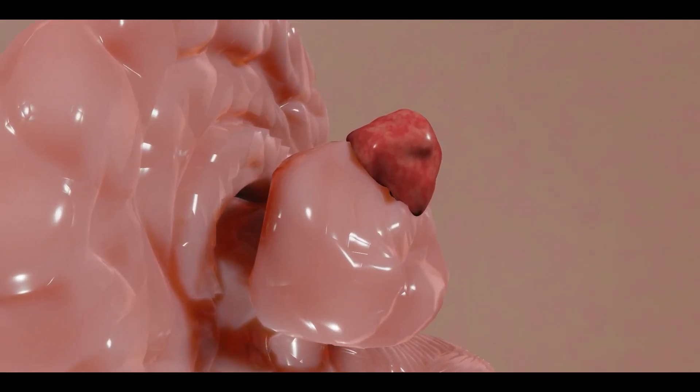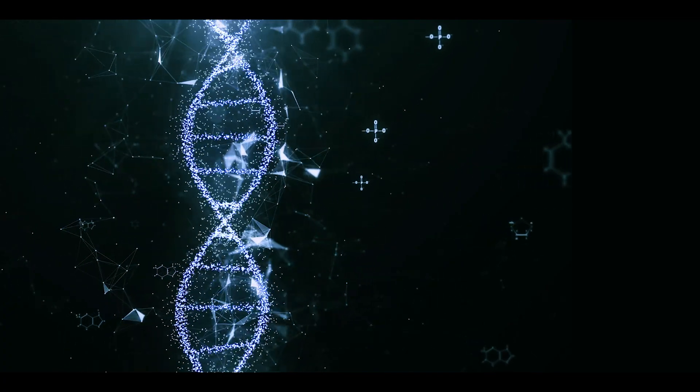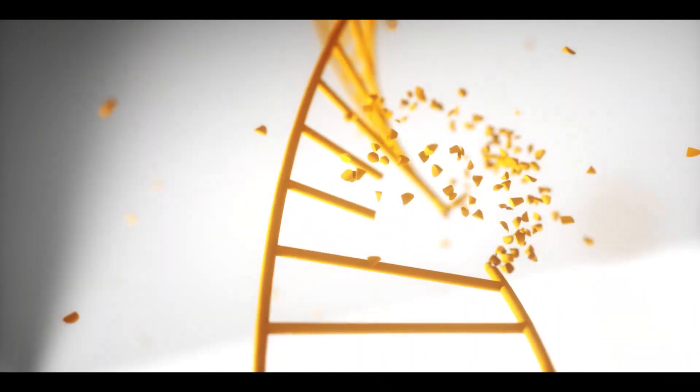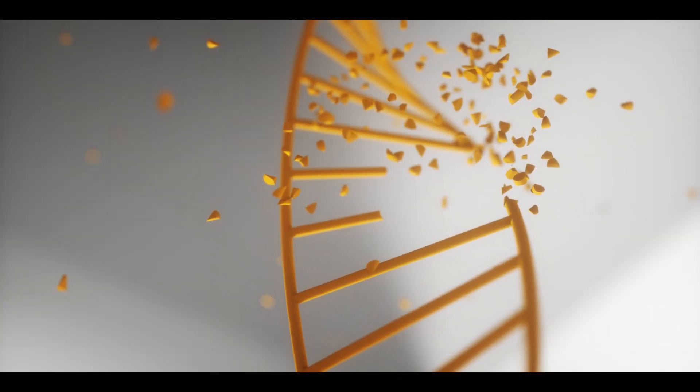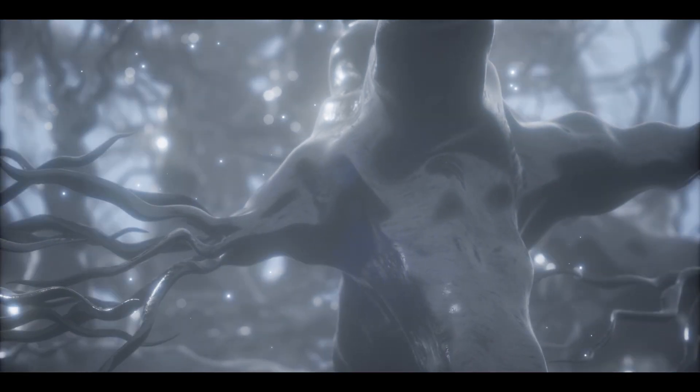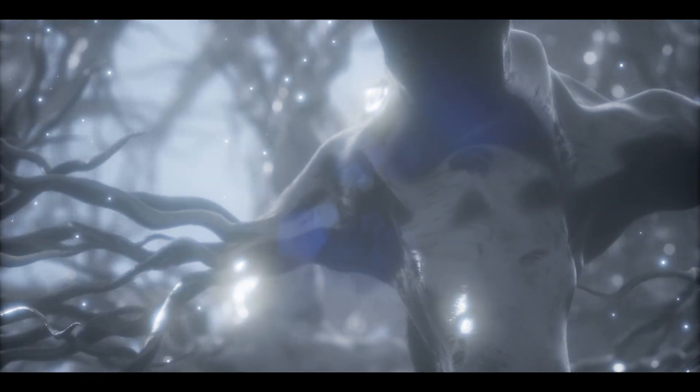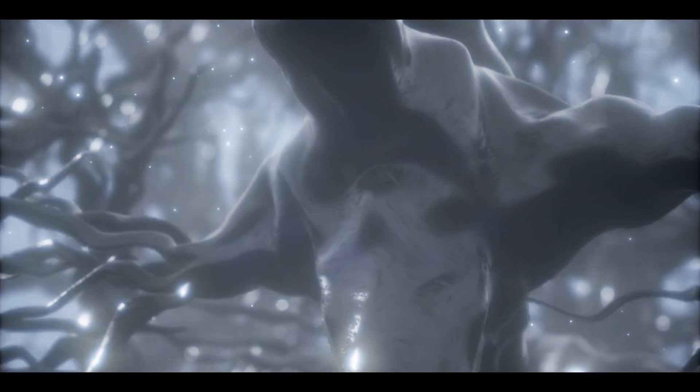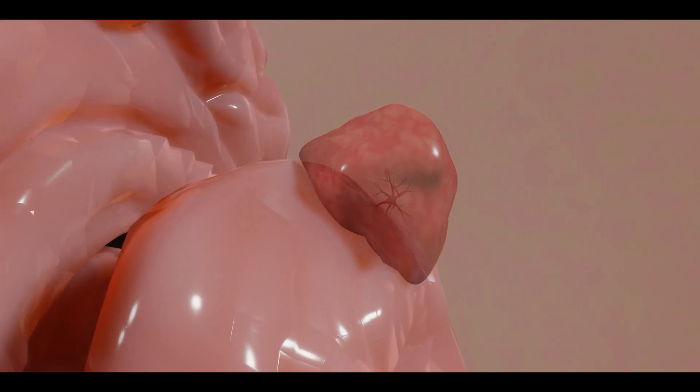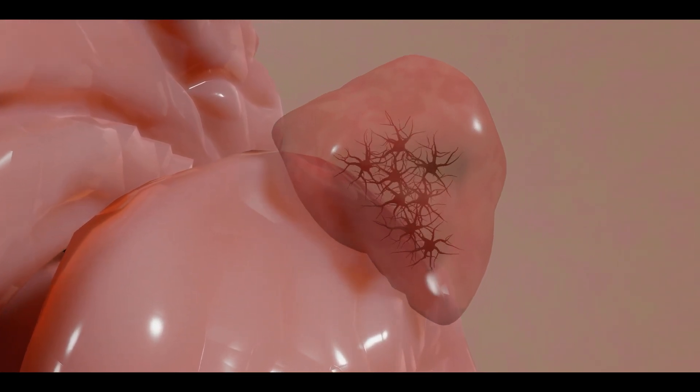If we talk about gliomas, researchers explain that gliomas are related to mutations in DNA of glial cells in the brain. Sometimes, due to unknown reasons, if mutations occur in DNA of glial cells, it causes abnormal growth of glial cells and forms tumors in the brain.